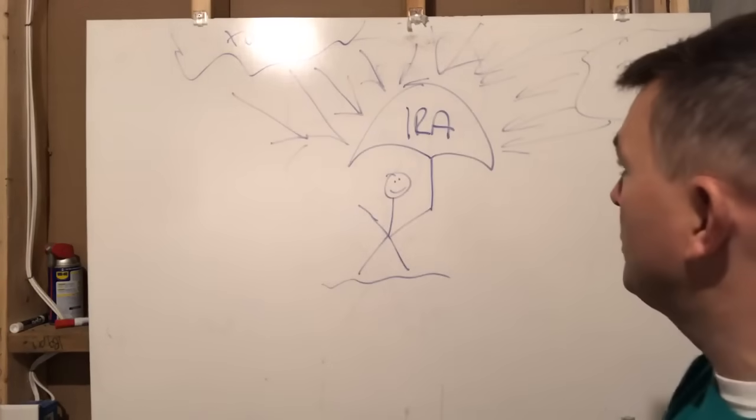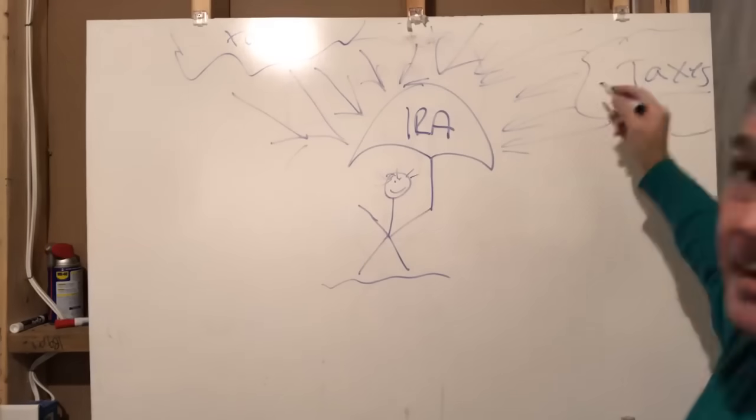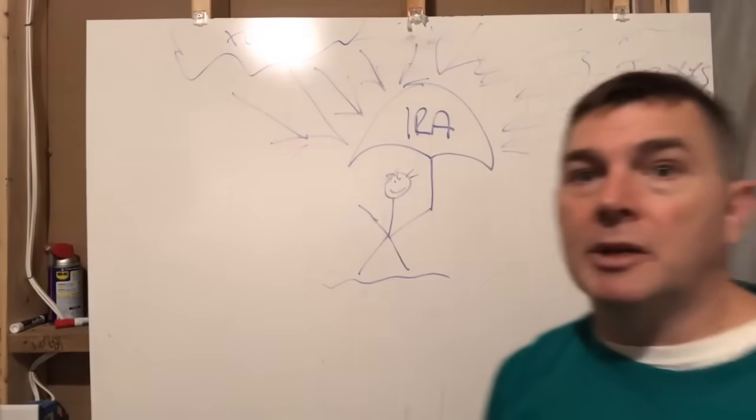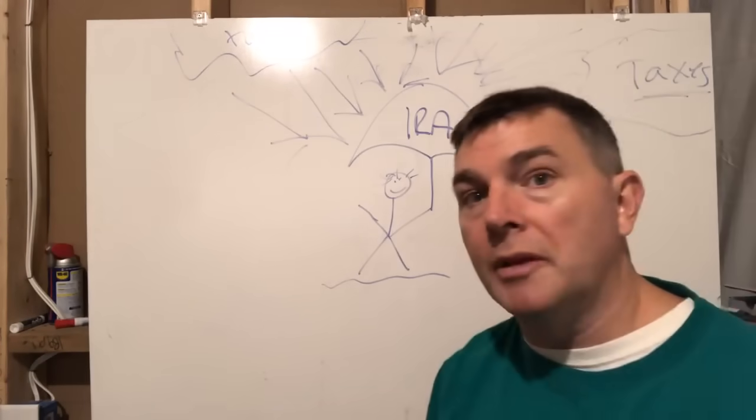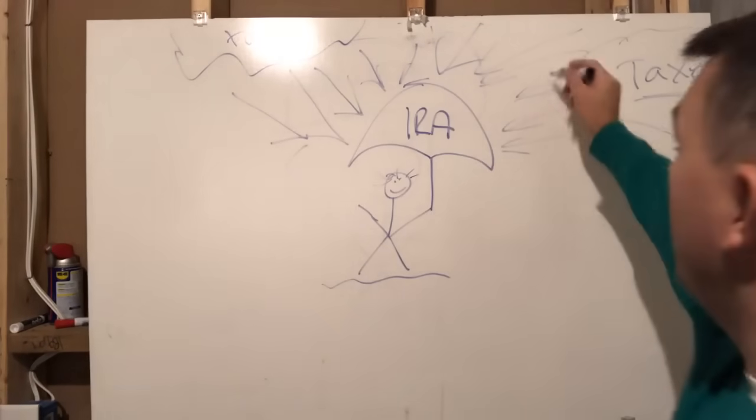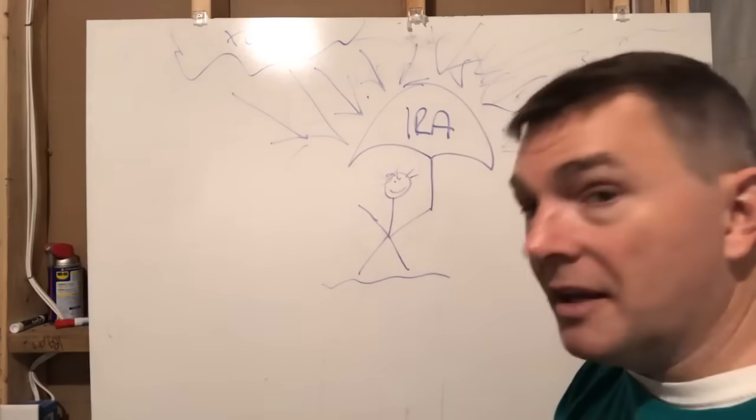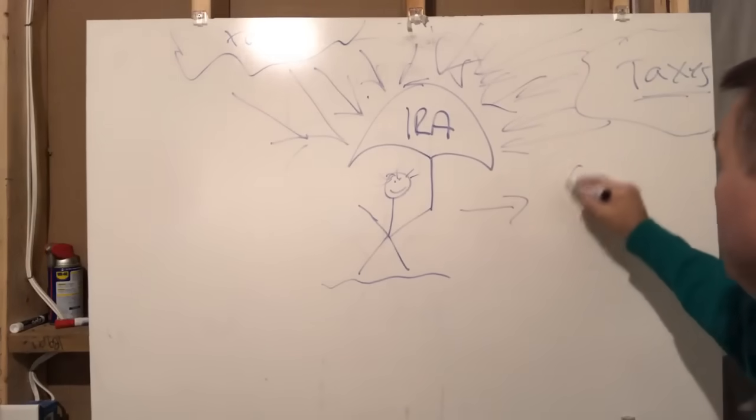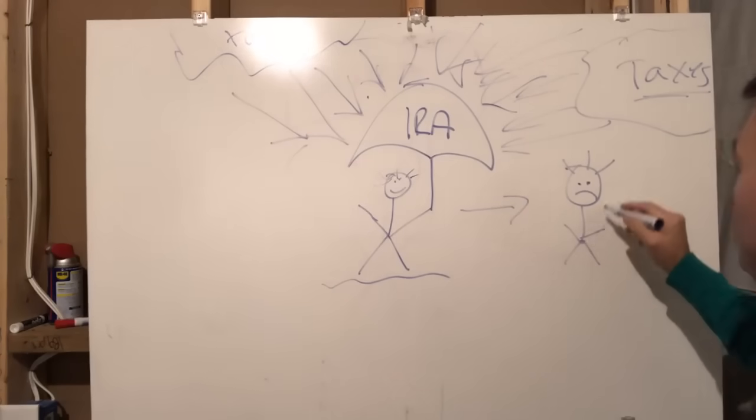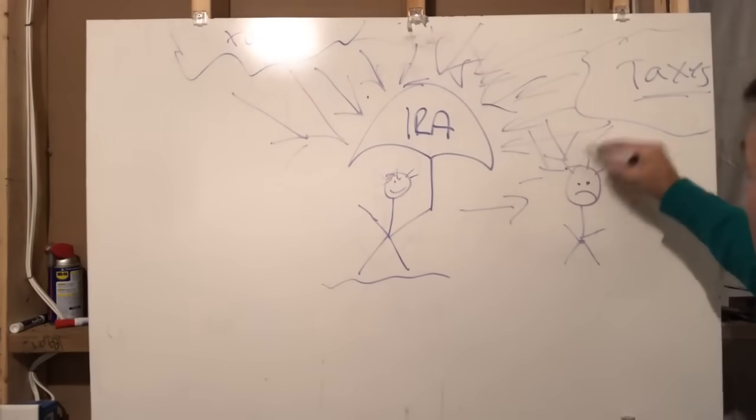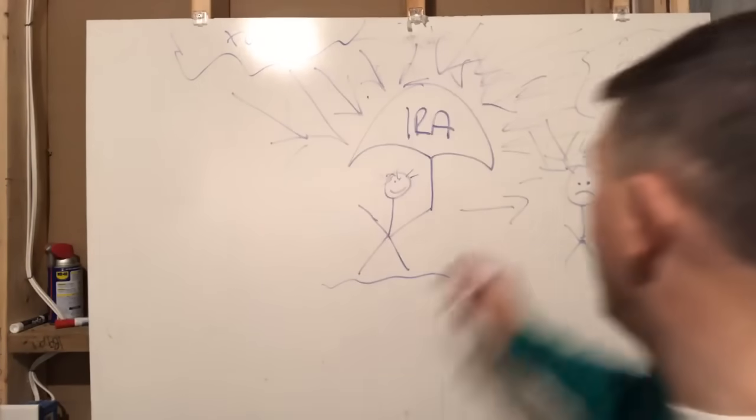All right, so here we got old Josh, happy Josh. He's got his umbrella shielding him from all the taxes. You can see taxes are coming at me every which way. But I'm like, man, I am under my IRA, I'm being shielded from all that without question, which is good. So the taxes are coming down. But at some point I got to move out from underneath that IRA and I'm going to have to pay taxes.